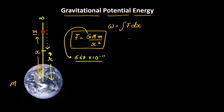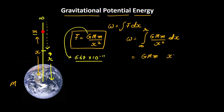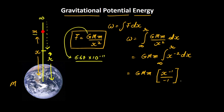Let us put this into the expression for work. So work will be equal to the integration of G capital M times small m divided by x squared dx, with the limits from infinity to R. We can take G capital M and small m as constants, so it becomes GMm times the integration of x raised to the power negative 2 dx from infinity to R.